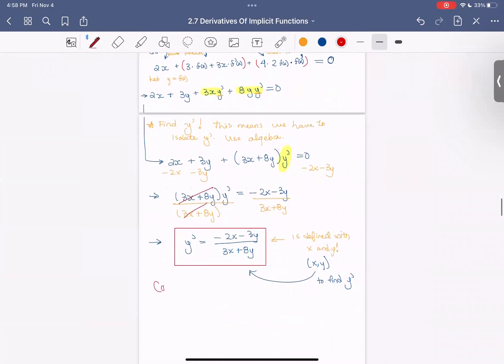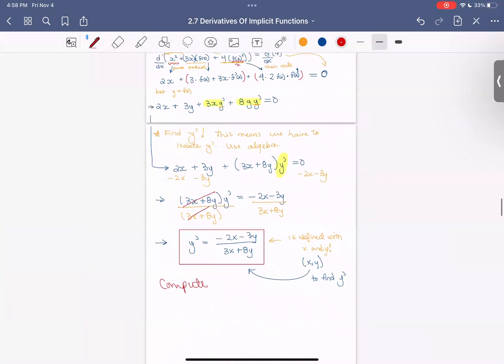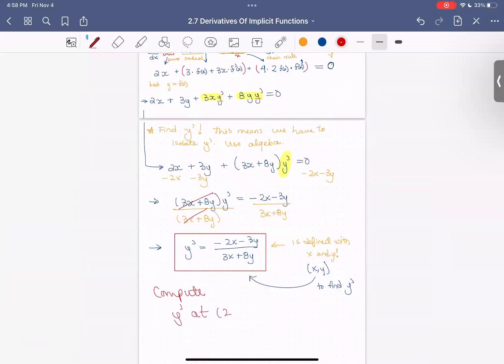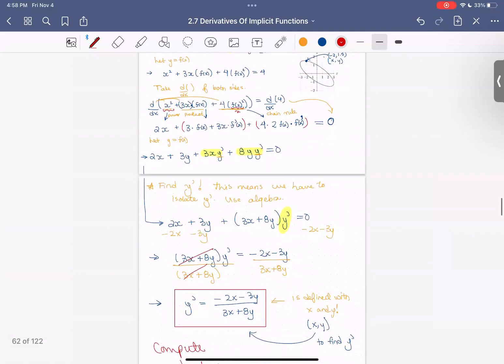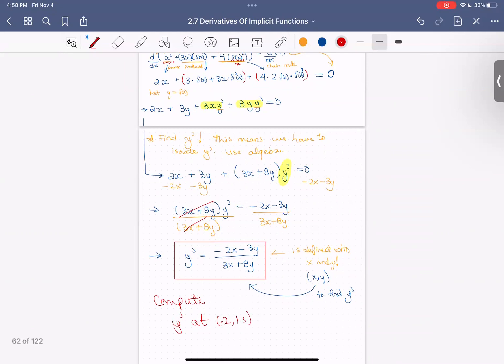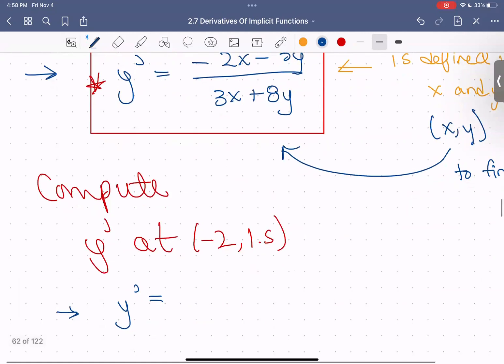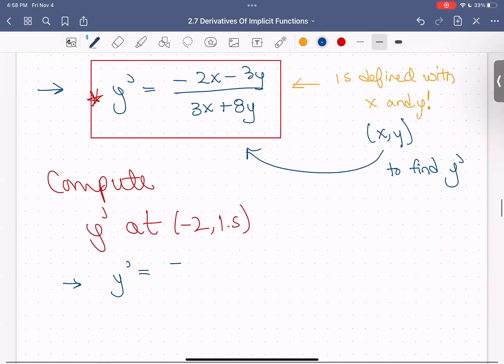So we'll compute, we'll do this example. It's kind of a bonus example because we weren't even asked to do it. So we want to compute y prime at the point which is negative 2, 1.5. So we want to find the slope of the tangent line at that point. So how do we do it? Well, we use the equation we just computed for ourselves. So that y prime is equal to negative 2 times negative 2 minus 3 times 1.5 all over 3 times negative 2 plus 8 times 1.5.